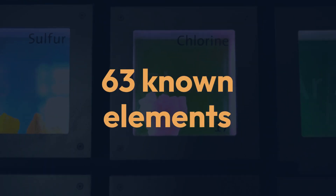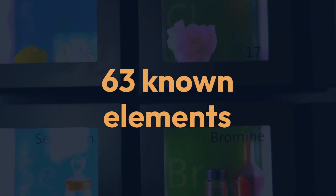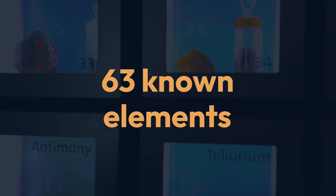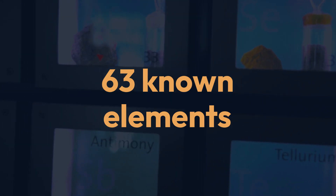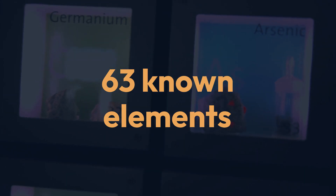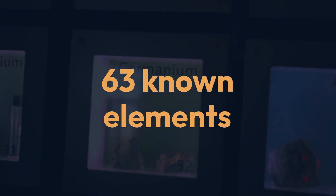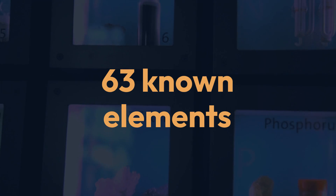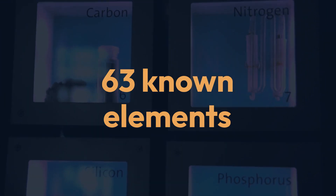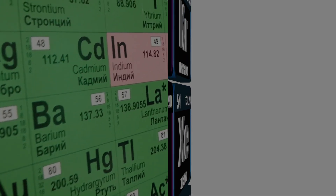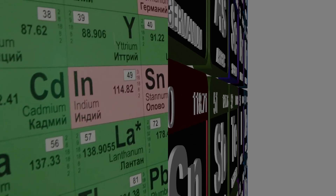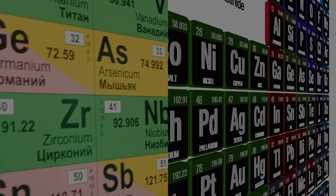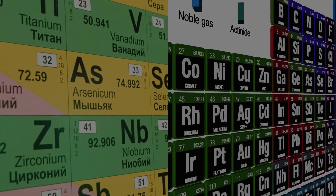The real breakthrough came with Dmitri Mendeleev in 1869. He arranged 63 known elements by atomic weight and similar chemical properties, leaving gaps for those yet to be discovered. Mendeleev's predictions for these missing elements, like gallium and germanium, were incredibly accurate.